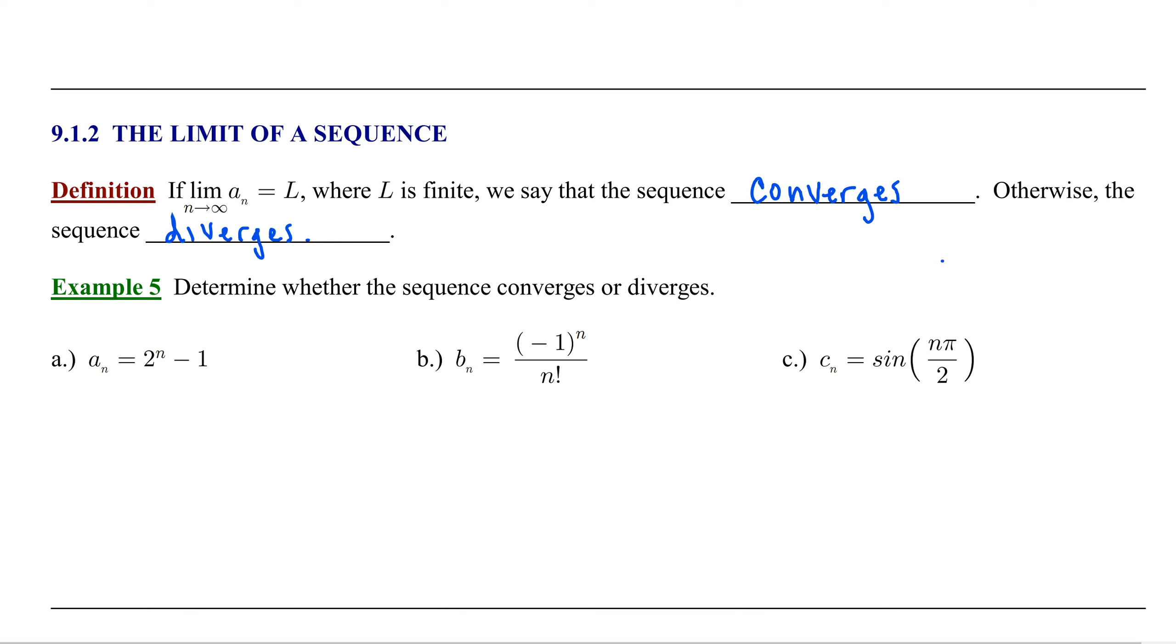In example 5, we want to determine whether the sequence converges (that is, it has a finite limit) or diverges (its limit goes to positive or negative infinity). In example a, we have a sub n equals 2 to the nth power minus 1, and we want to find the limit as n goes to infinity of 2 to the nth power minus 1.